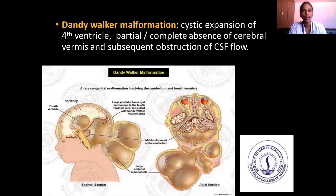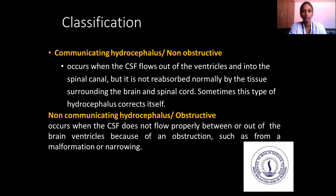Dandy-Walker malformation involves cystic expansion of the fourth ventricle, partial or complete absence of the cerebellar vermis, and unobstructed obstruction of CSF flow.